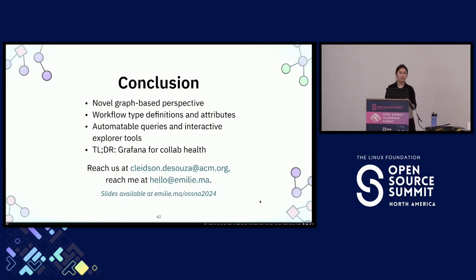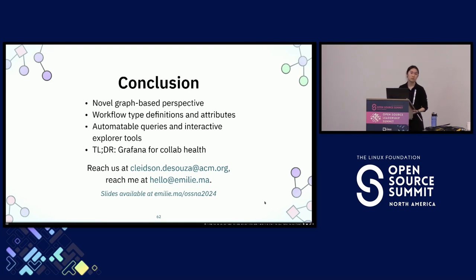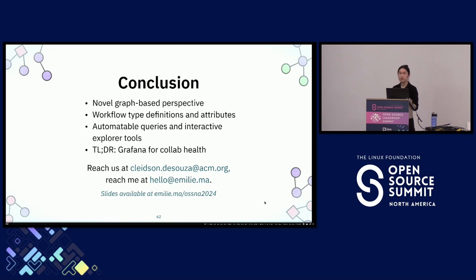An audience member asks about churn—situations like issues that are closed but then reopened, or multiple PRs that try to solve a single issue where the issue doesn't get closed. Emily explains that one design decision was to focus on merged PRs and closed issues, representing work that was done at the point of scraping. So churn isn't something they've looked at, but she will forward that to her supervisors as a potential area for future work.